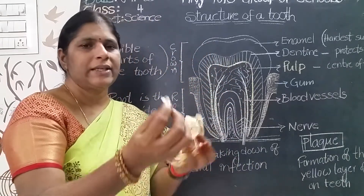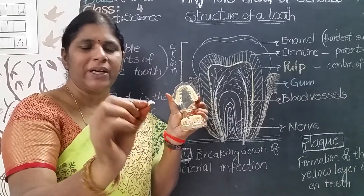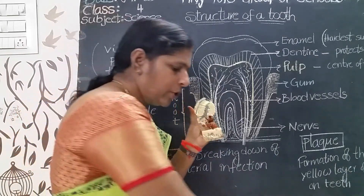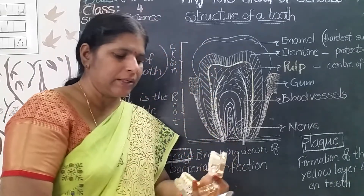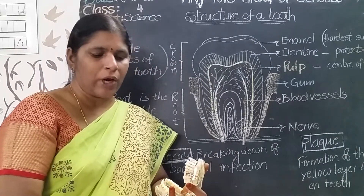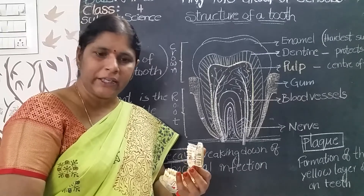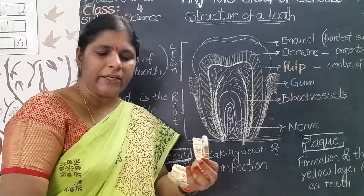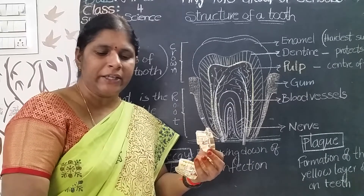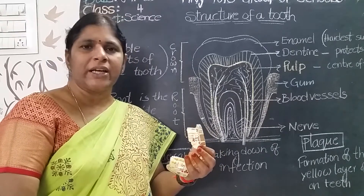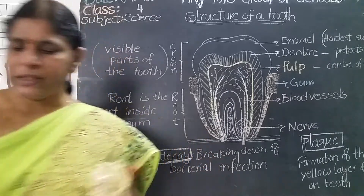I brought this set from the dentist for better understanding. This is an artificial tooth. The four kinds of teeth are: incisors, canines, premolars, and molars. Incisors are also called cutting teeth; canines are tearing teeth; premolars are crushing and chewing teeth; and molars are grinding teeth. I will show a video for better understanding.